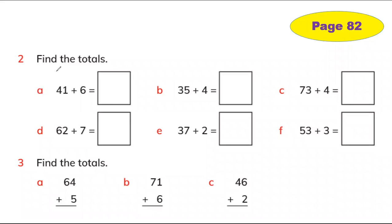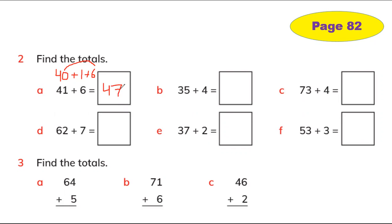I'm going to write 41 as parts: 40 and 1. So 41 plus 6 — add them together. You can add 40 plus 6 first, which is 46, then 46 plus 1 equals 47. So in this way you can add different numbers.